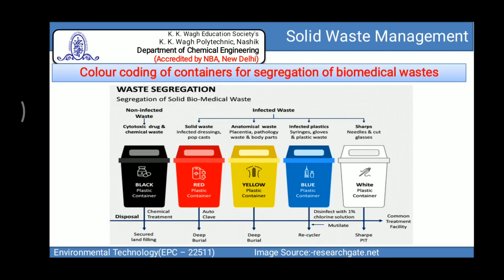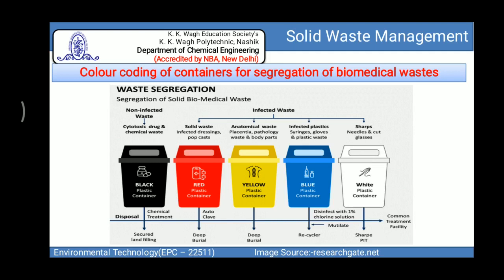In the color coding system: black color containers are used for non-infected waste or cytotoxic drug and chemical waste; red color containers are used for solid waste like infected dressings and plaster casts; yellow color bins are used for anatomical waste like placenta, pathology waste, and body parts; blue color bins are used for infected plastic syringes, gloves, and plastic waste; and white color bins are used for sharps, needles, and cut glass.